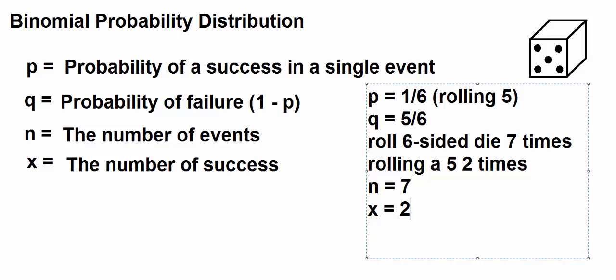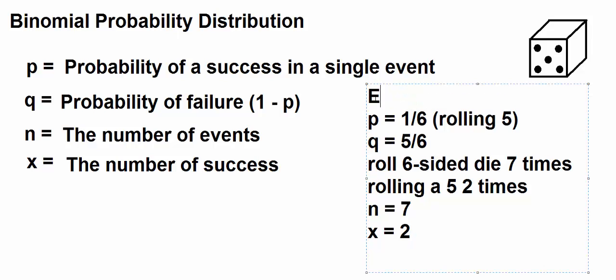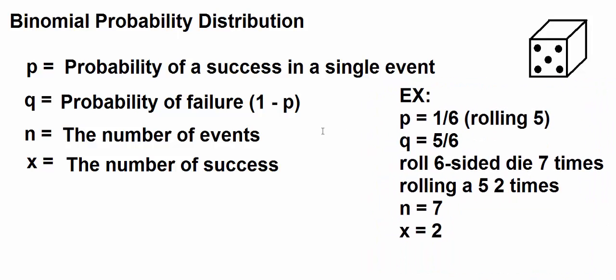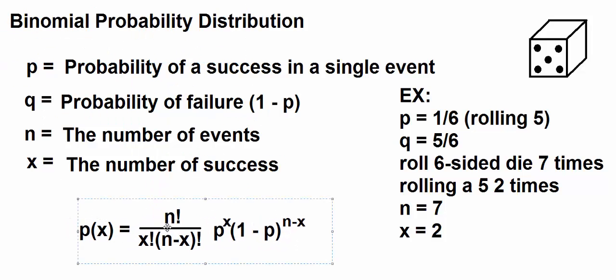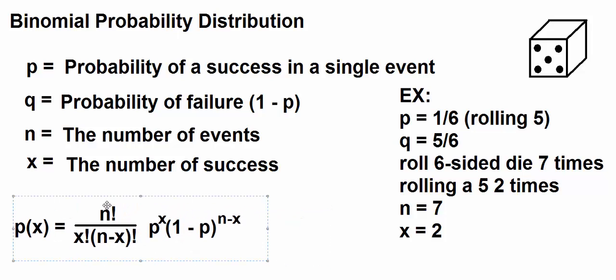So, what is the probability distribution? Here it is. Here's the probability distribution. N factorial divided by X factorial times N minus X factorial times P to the X times 1 minus P raised to the N minus X.